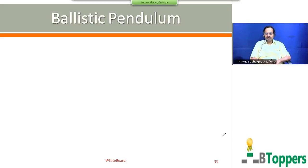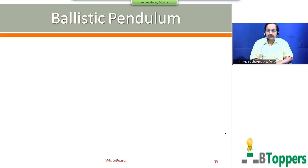Next I am going to discuss one of the applications of collisions: the ballistic pendulum. This ballistic pendulum is a simple arrangement where a wooden block is suspended by a string and is initially at rest. This arrangement was used in earlier days for measuring the speeds of bullets.